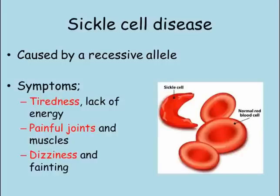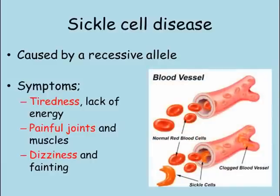Another genetic disease caused by a recessive allele is sickle cell disease. This condition causes the red blood cells, which carry oxygen around the body, to change into a sickle shape, meaning they are not able to carry as much oxygen as normal red blood cells. Symptoms of sickle cell disease include tiredness and a lack of energy caused by the reduced oxygen in the blood, as well as painful joints and muscles where the damaged red blood cells group together. Low oxygen levels can also lead to dizziness and fainting.